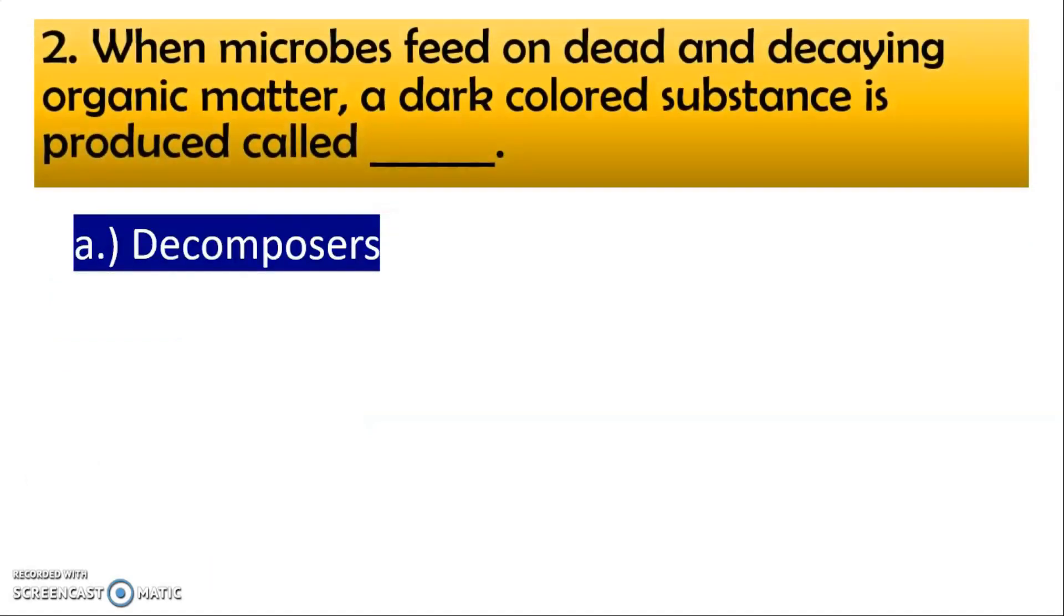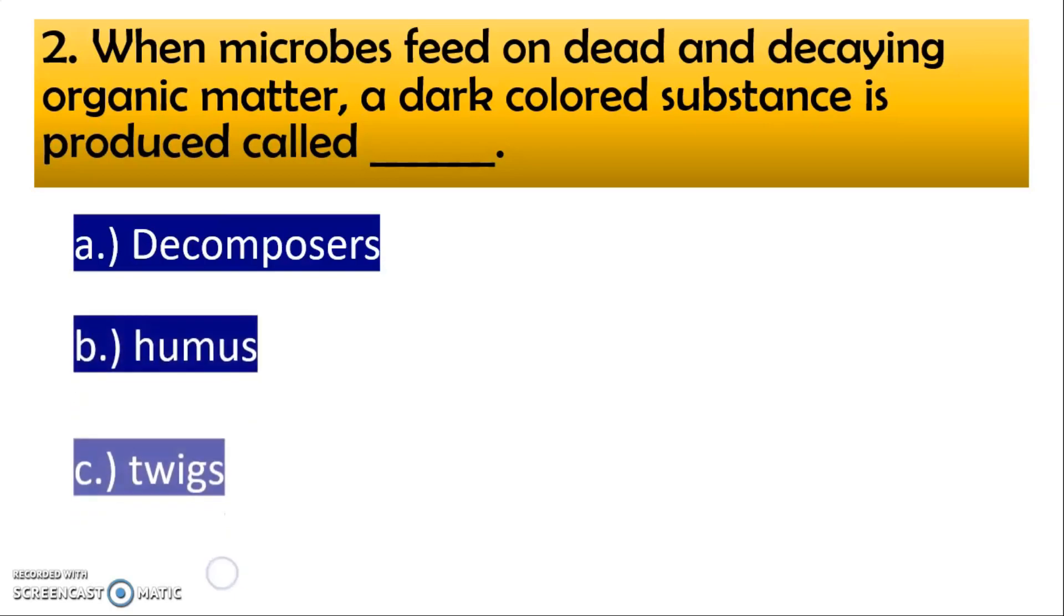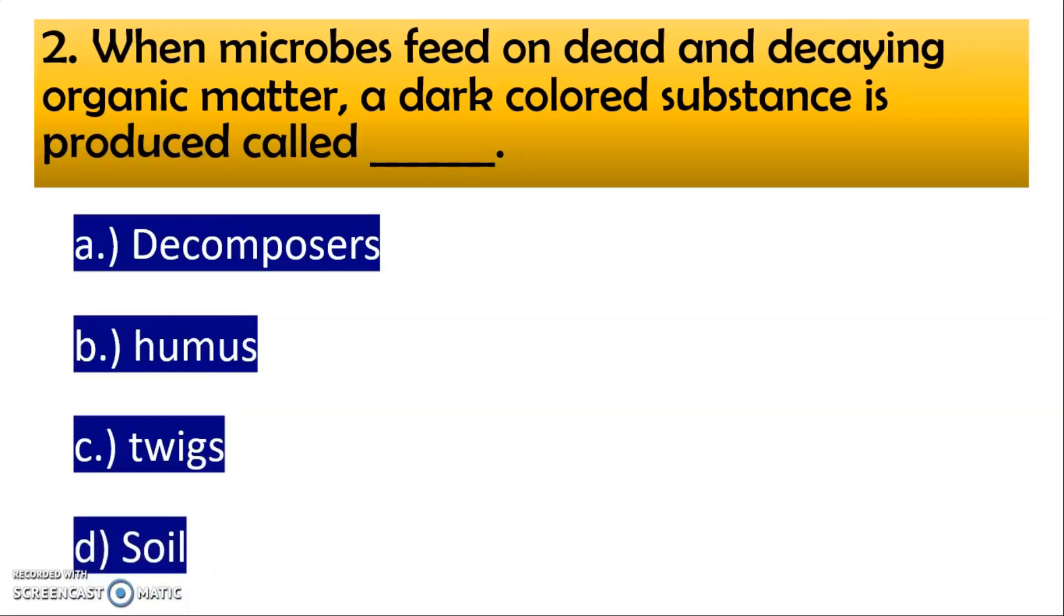Now second question, when microbes feed on dead and decaying organic matter, a dark colored substance is produced called A option decomposers, then B option humus, then C option twigs and then D option soil. So correct option is B, humus, it was so simple.